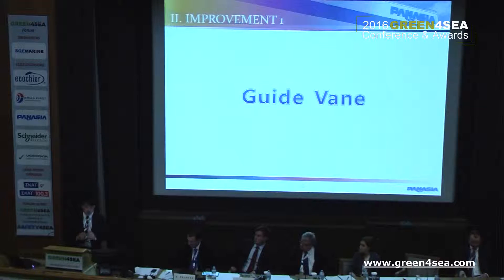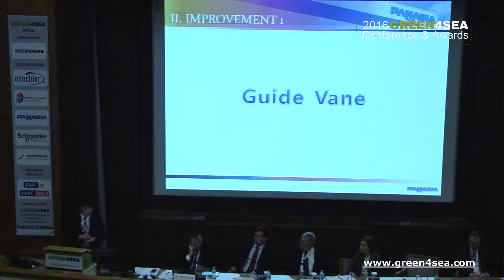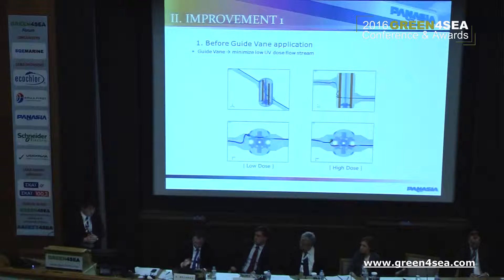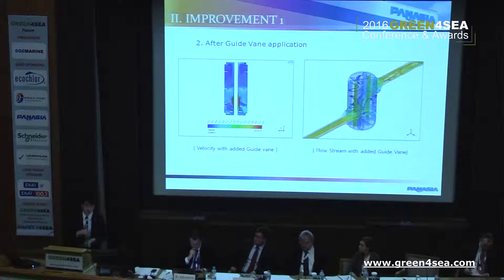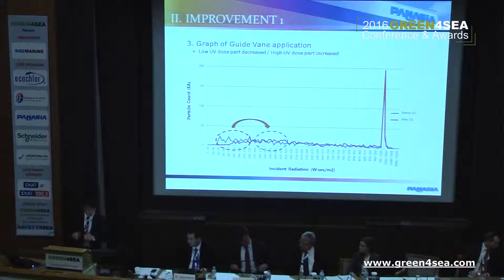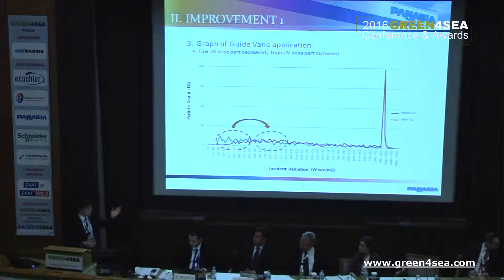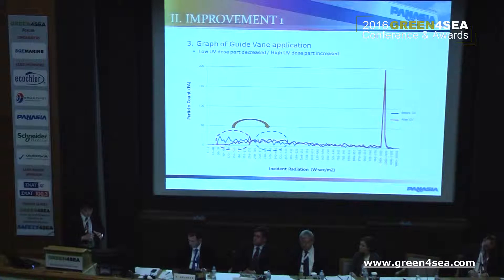Let me introduce three cases. First, the guide vein. We applied the guide vein mainly to create a disturbance of the flow stream inside the UV reactor, making turbulence inside the reactor so that each microorganism's residence time is increased. There can be cases of low dose, but by installing the guide vein — as you can see on the right side of the picture — there is high turbulence, and we extend the total residence time of each microorganism. In the graph, the blue line is before guide vein and the red line is after guide vein — the amount of particles at the lower dose part is decreased after the guide vein.